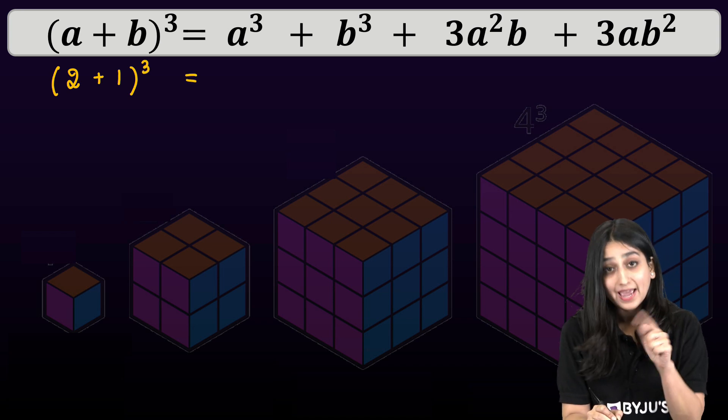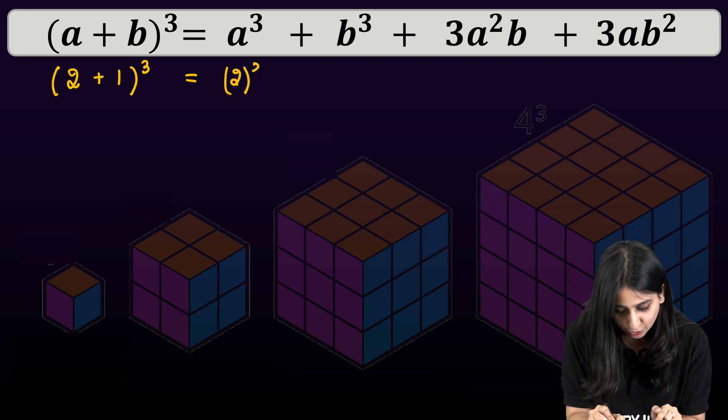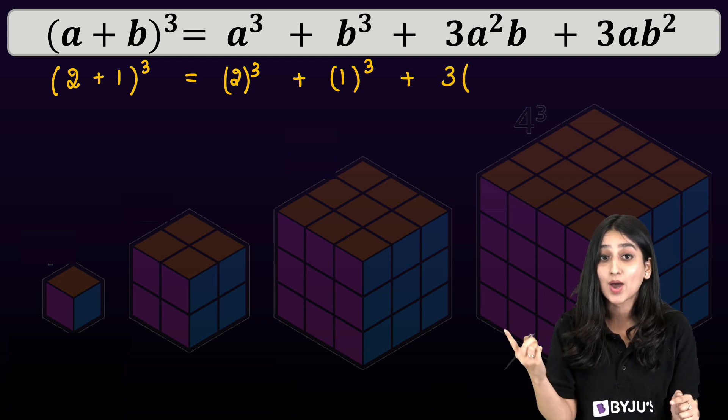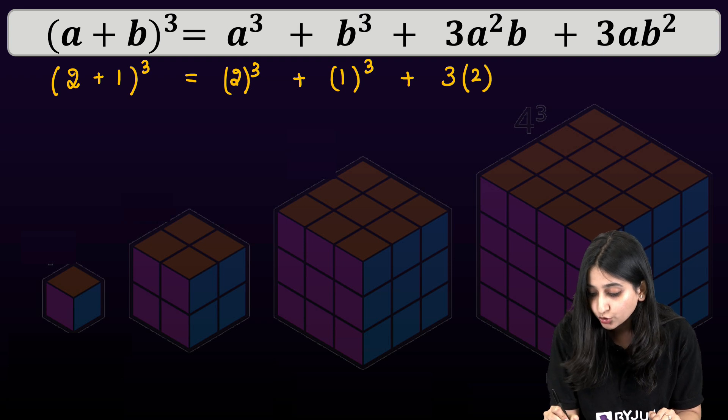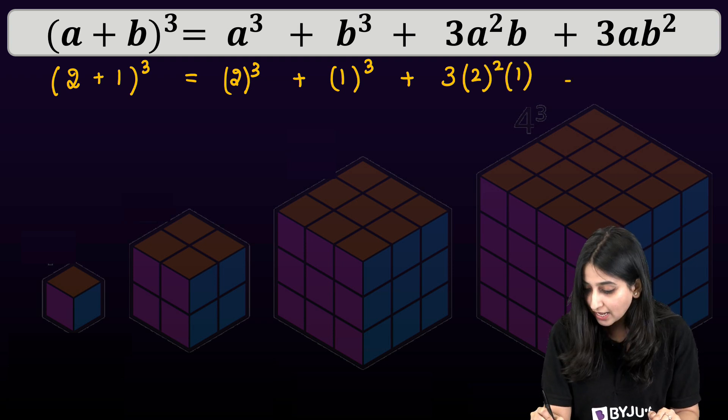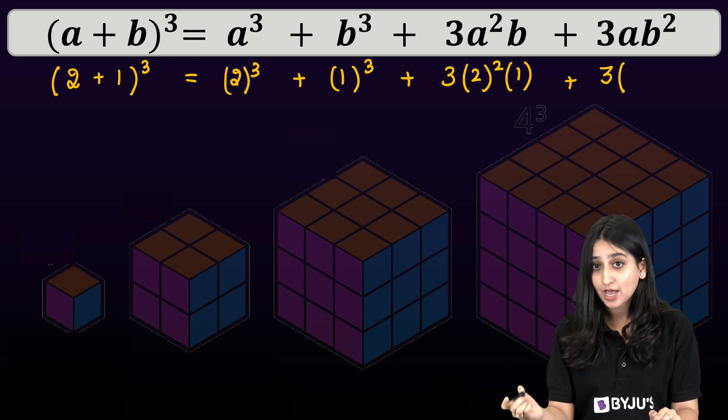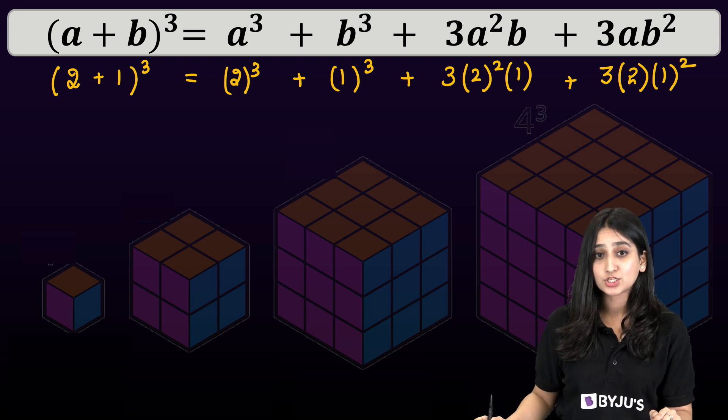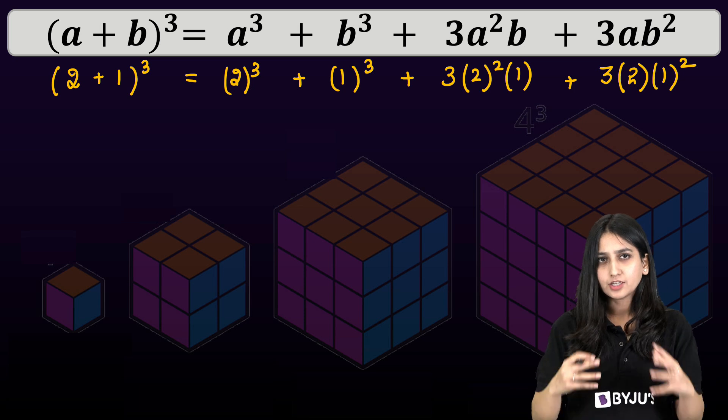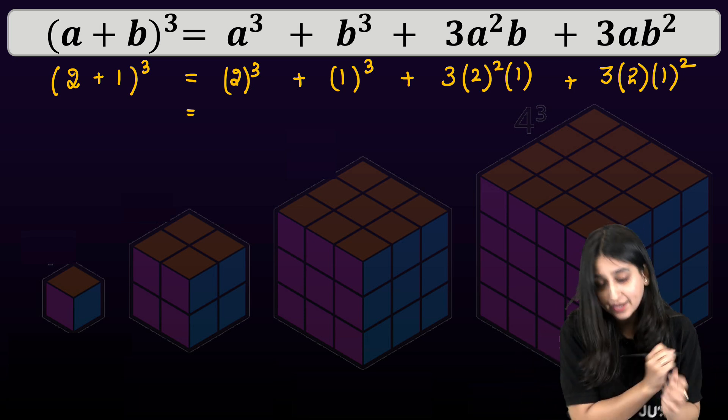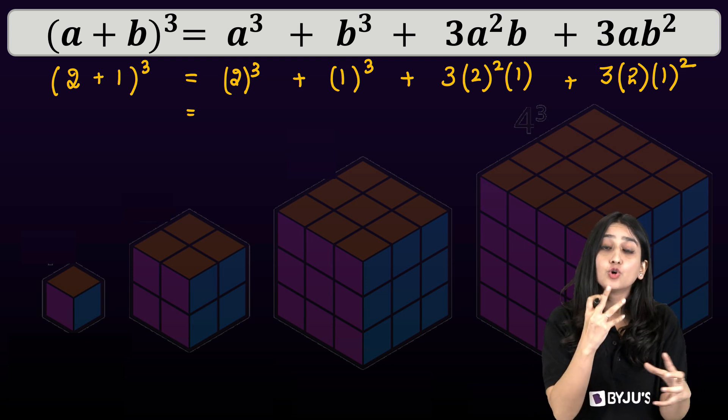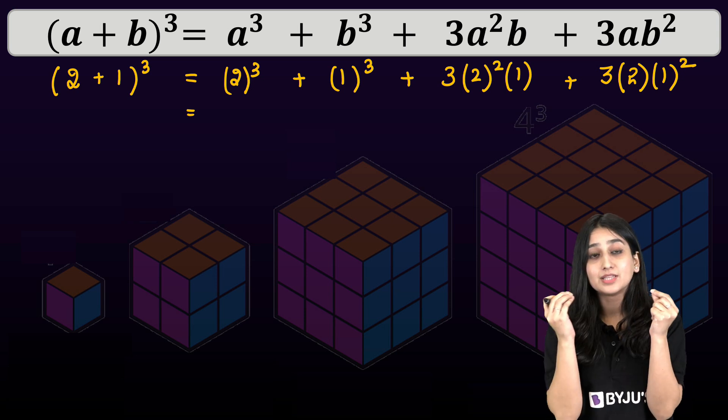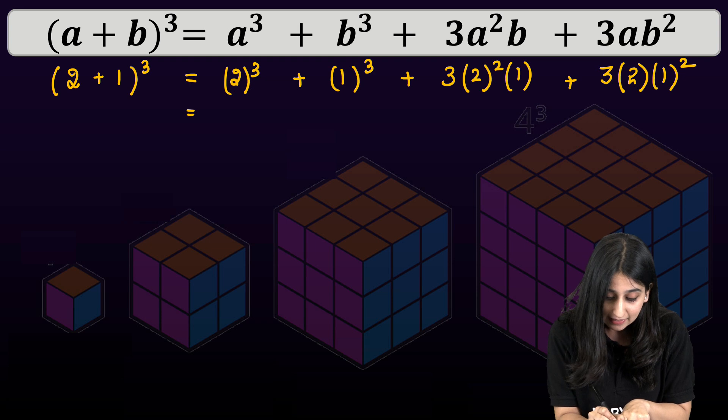That will be equal to A cube. A cube can be written as 2 cube. B cube can be written as 1 cube. Then we have 3 into A square B, which can be written as 3 into 2 square into 1. Plus we have 3 into AB square, which can be written as A is 2. And since B is 1, so we can write 2 into 1 square. Then this is sorted.